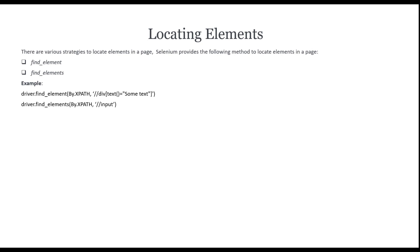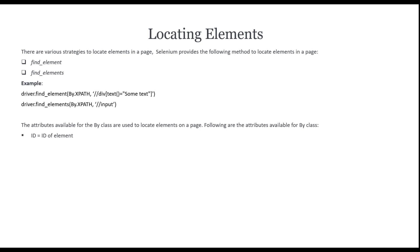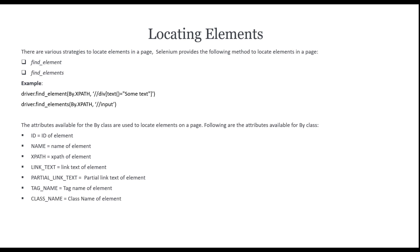XPath is a type of locator. For find_elements we call driver.find_elements, using By.xpath as the argument and passing the xpath value. There are eight different attributes of the By class available to locate elements on the page, such as By.id, By.name, By.xpath, By.link_text, By.partial_link_text, By.tag_name, By.class_name, and By.css_selector.